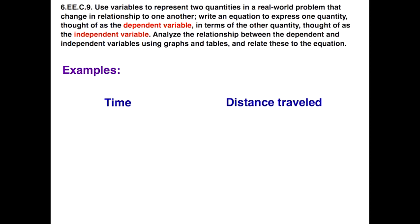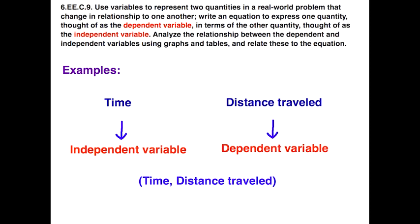Let's look at a second example. Let's say we're comparing time and distance traveled. In this situation, the distance that you traveled depends on the amount of time that you are traveling. So your distance traveled would be your dependent variable, and the time involved would be your independent variable. When we put this as ordered pairs, your time would go first, because that's your independent variable, that's your X value, and the distance traveled is your dependent variable, that would be your Y value.